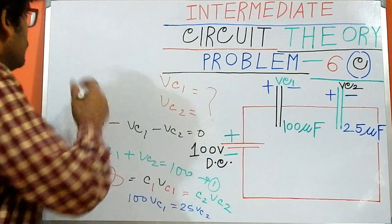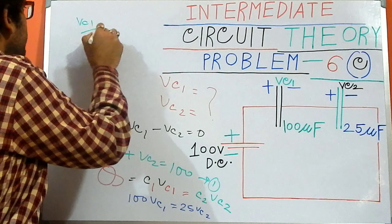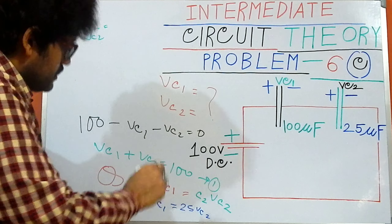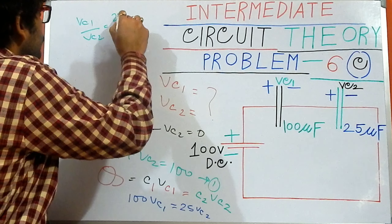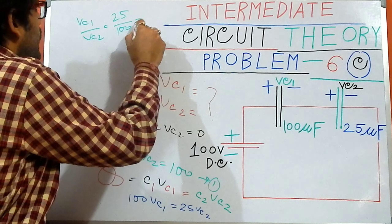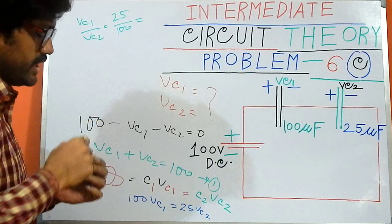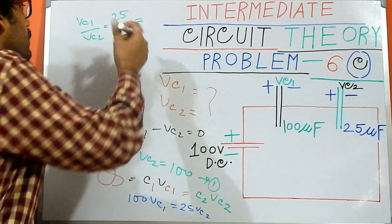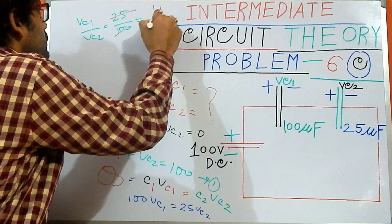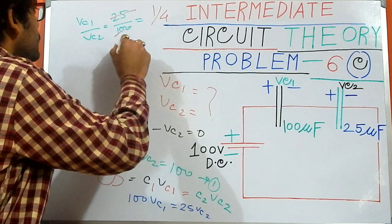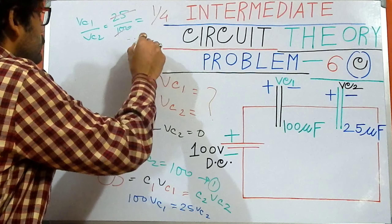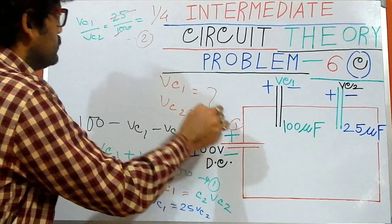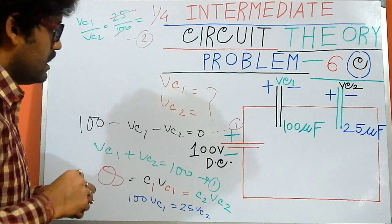Taking the ratio VC1 divided by VC2, we get 25 divided by 100, which simplifies to 1 over 4. This is our second equation.